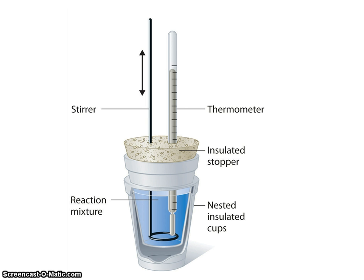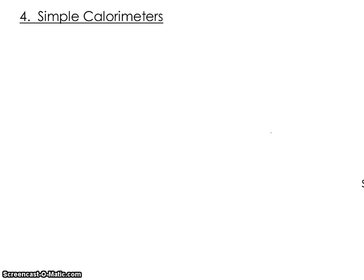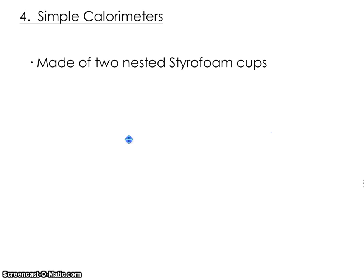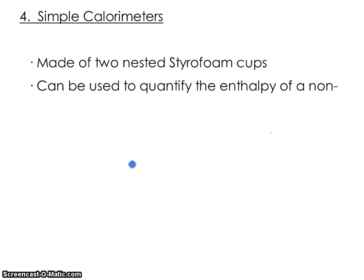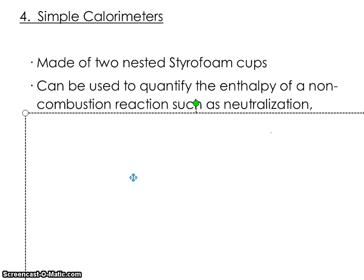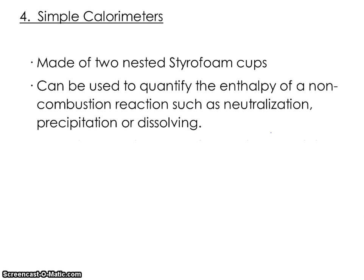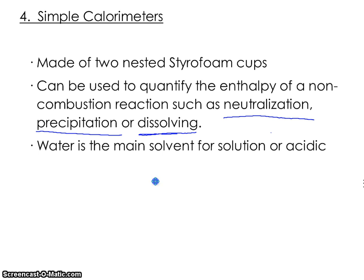Simple calorimeters are really just two styrofoam cups nestled together with water in the middle. Obviously, since there's water inside, we can't be burning anything, so simple calorimeters are not going to be using combustion reactions. They're made of two styrofoam cups nested together and can be used to quantify the enthalpy of non-combustion reactions — no fire. We will consider reactions such as neutralization, which is an acid and a base reacting together; precipitation, which means forming a solid precipitate from two aqueous solutions; or dissolving, where just dissolving an ionic compound can either absorb or release heat.